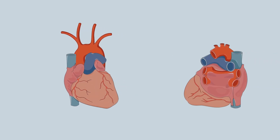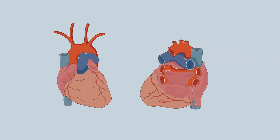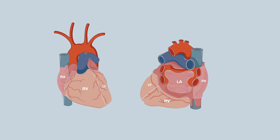Looking at the anterior and posterior aspects of the heart, note the following structures. This area here is formed by the right atrium. The anterior and inferior aspects of the heart are largely formed by the right ventricle. The base of the heart is largely formed by the left atrium, and the lateral aspect of the heart is formed by the left ventricle.